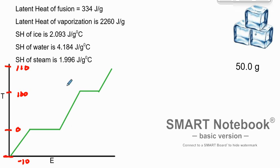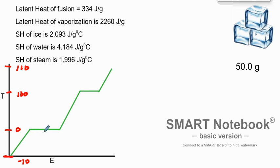We're looking at the heating curve for water, ice, and steam. We have a sample of 50 grams of ice starting at negative 10 degrees Celsius, and we're going to heat it all the way to 110 degrees Celsius. We'll see a gradual increase in temperature until it starts to melt at zero degrees Celsius, then the temperature remains constant during melting because we're overcoming the intermolecular forces of the ice.